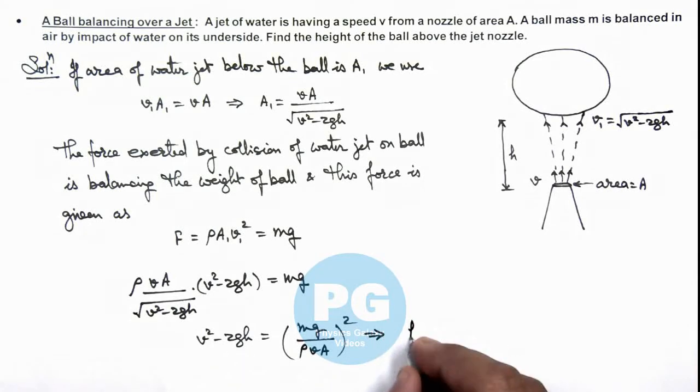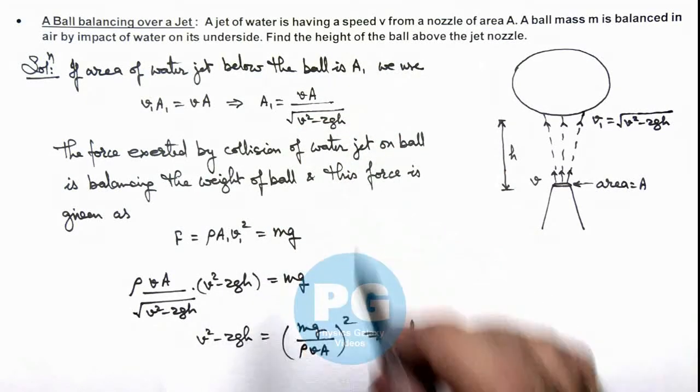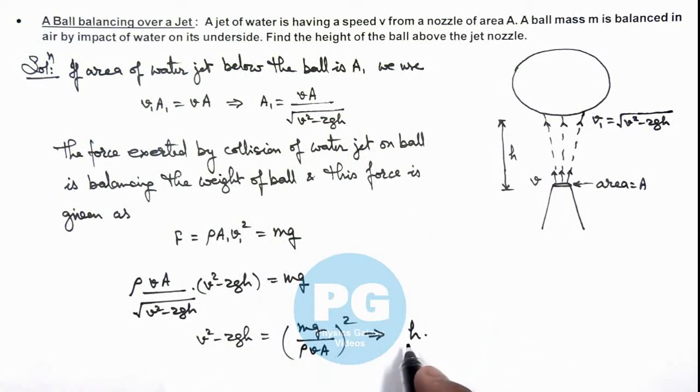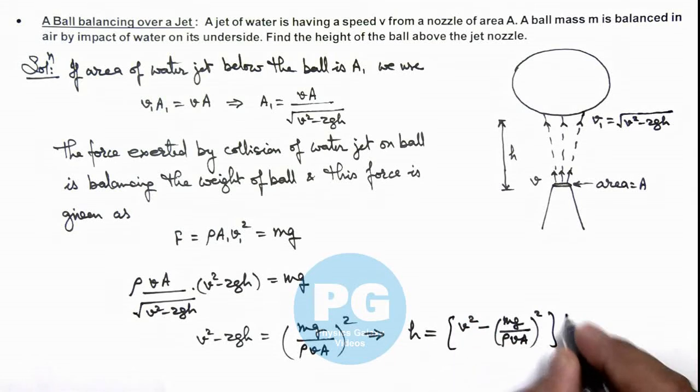So in this situation we can simply calculate the value of h, which we are required to find, the height of the ball above the jet nozzle. So this gives us the value of h is equal to v squared minus mg by ρ v A whole squared, whole divided by 2g. That is the result of this problem.